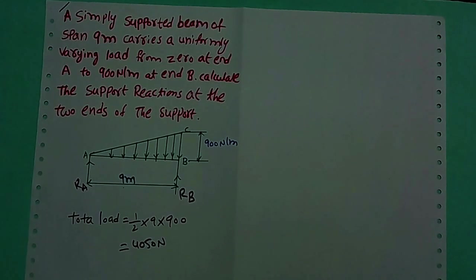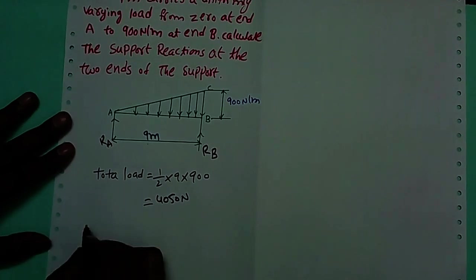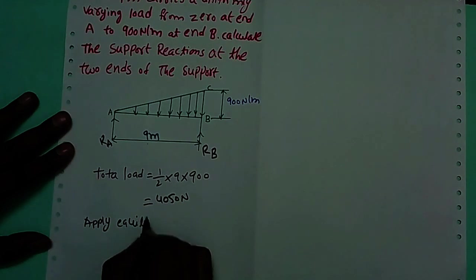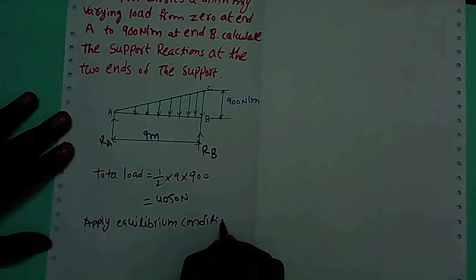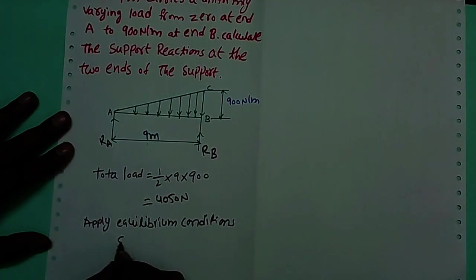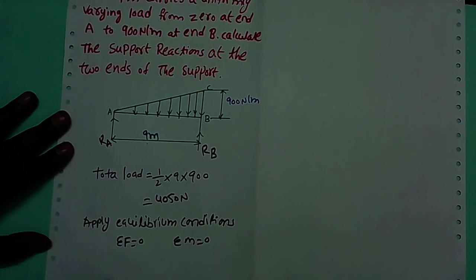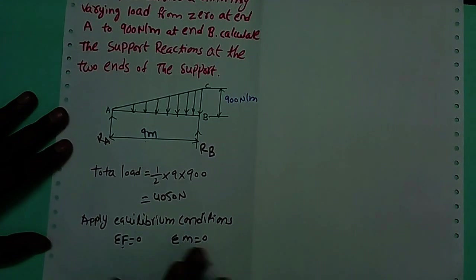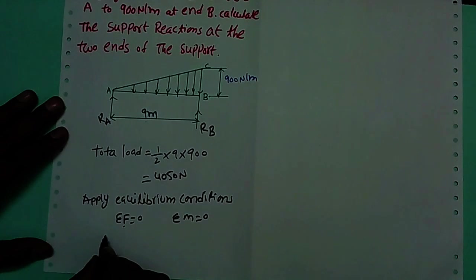Now we have to find the RA and RB values. To find those values, we have to apply the equilibrium conditions. The equilibrium conditions are: Sigma F equal to 0, and Sigma M equal to 0. Sigma F means sum of all vertical forces. Sigma M means sum of all moments. We have forces only along the Y axis, so we take Sigma Fy equal to 0.